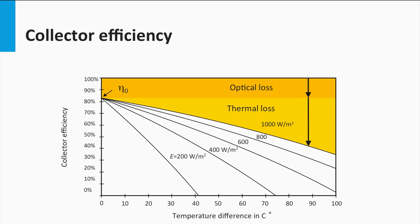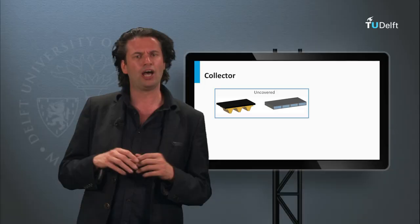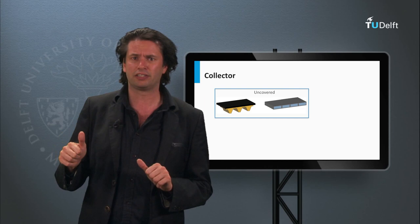To reduce losses, insulation from the surroundings is important, especially when the temperatures are high. Collectors can be classified in three categories: uncovered, covered, and vacuum.